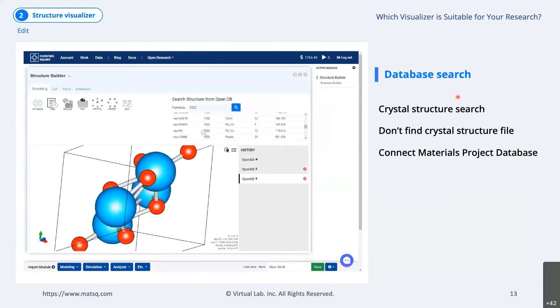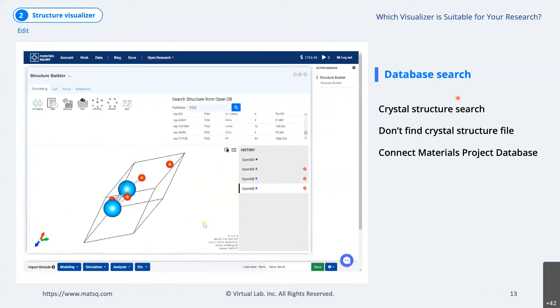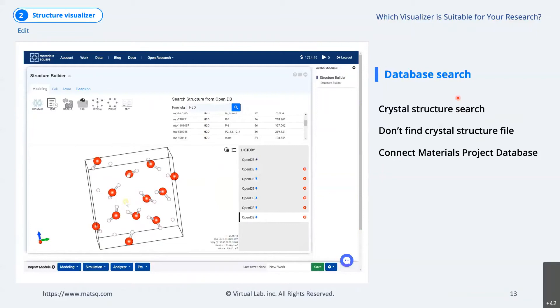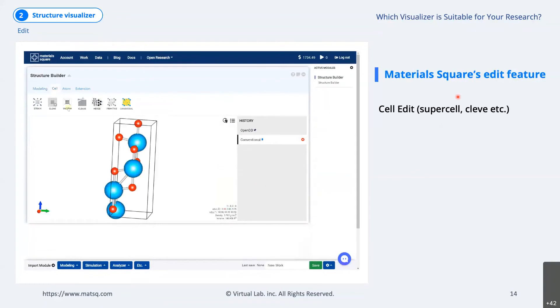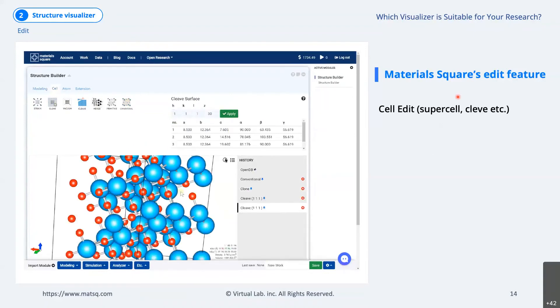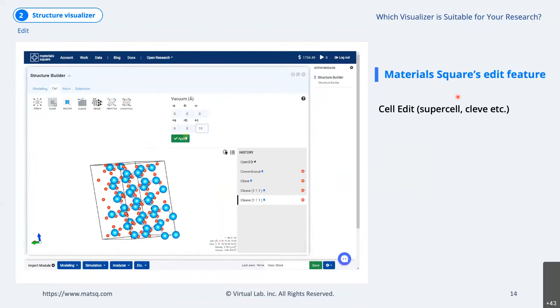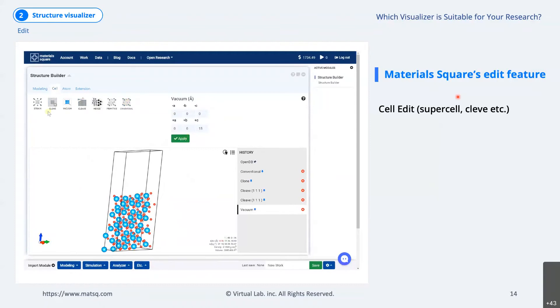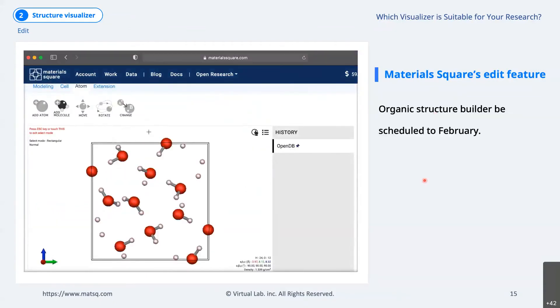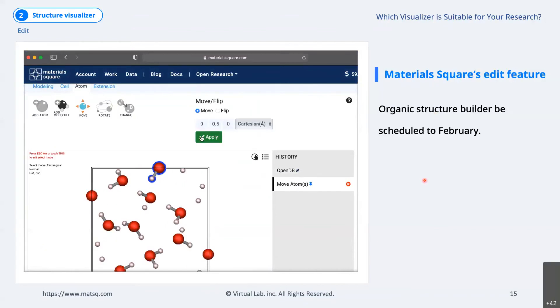Among the five visualizers, VMD and OVITO cannot modify the structure or they can only be modified through very complex scripting. Materials Square provides various manipulation functions through the structure builder module. Of course, you can create the structure from the space group definition through the crystal builder, but you can simply load the structure you want through the linked external database. The imported structure can be cloned to create a supercell or it can be reoriented using the cleave function. In addition, by adding the vacuum to the lattice, you can easily create a slab model or manipulate atom coordinates. We can easily create a desired structure by selecting each atom or several atoms and moving or rotating them.